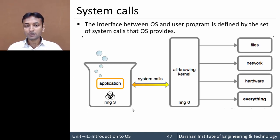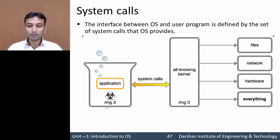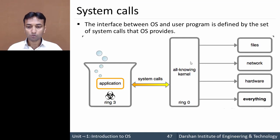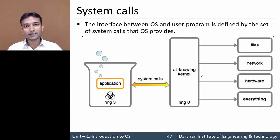Now this application program always runs in user mode. While running, it may require some of the services provided by the kernel or operating system. For example, if this user program wants to read some data from a file, it is running in user mode, but to read data from the file it must be switched to kernel mode. This switch from user mode to kernel mode is done using a system call — it is simply the interface between the application program and the operating system.